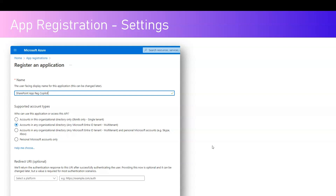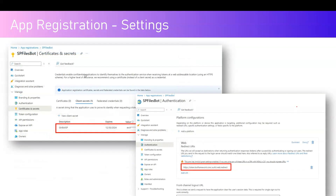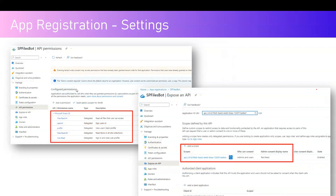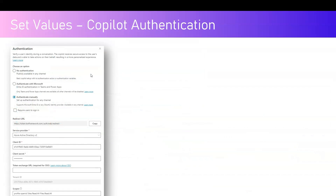Then go into portal.azure.com, create an app registration, provision a secret, configure the redirect URI, specify the API permissions, and expose an API. Then navigate to your Copilot and click on 'Authenticate Manually' instead of 'Authenticate with Microsoft' or 'No Authentication', because you need an authentication token passed to access SharePoint data securely. Once you fill in the client ID, client secret, and configure the scopes, you should be ready to deploy.